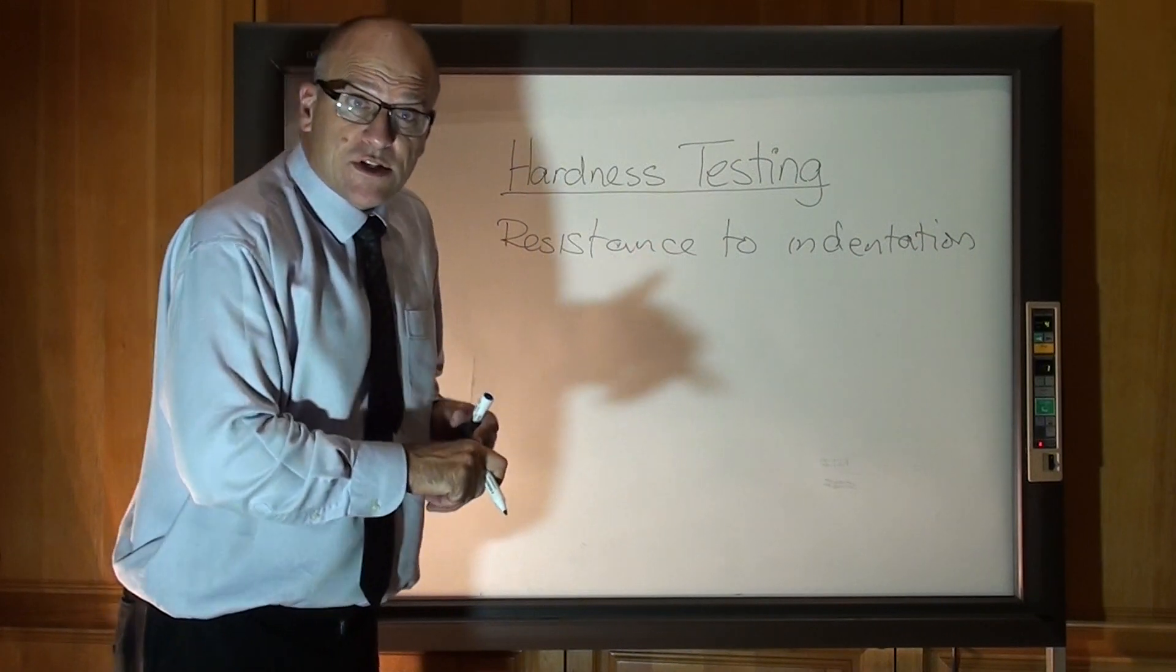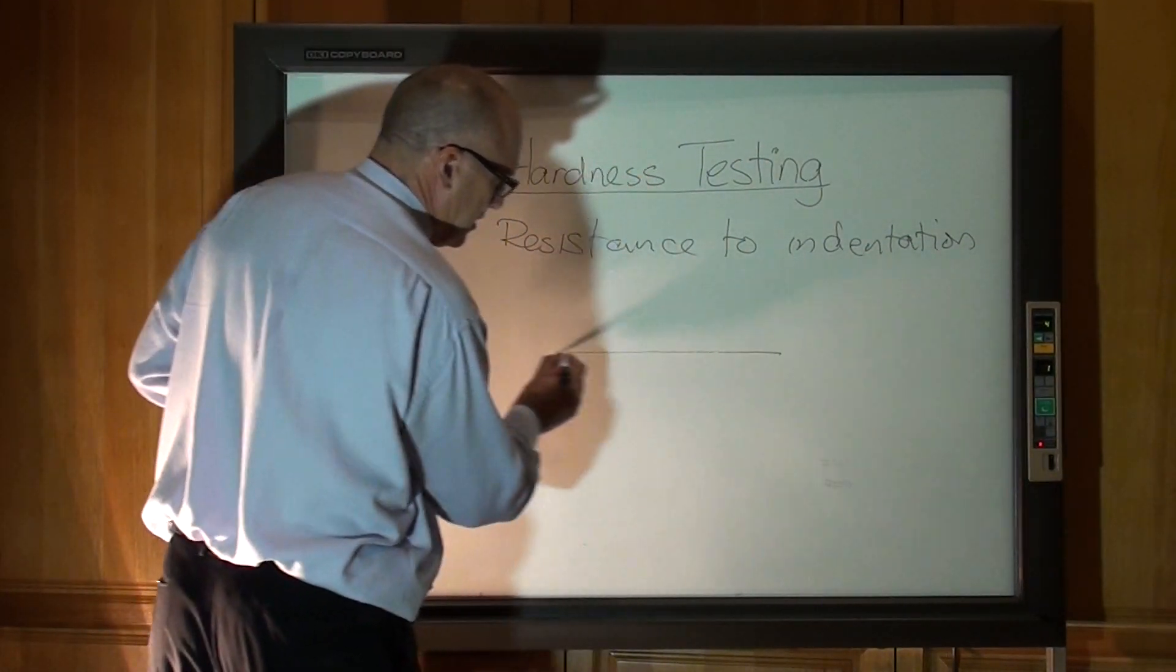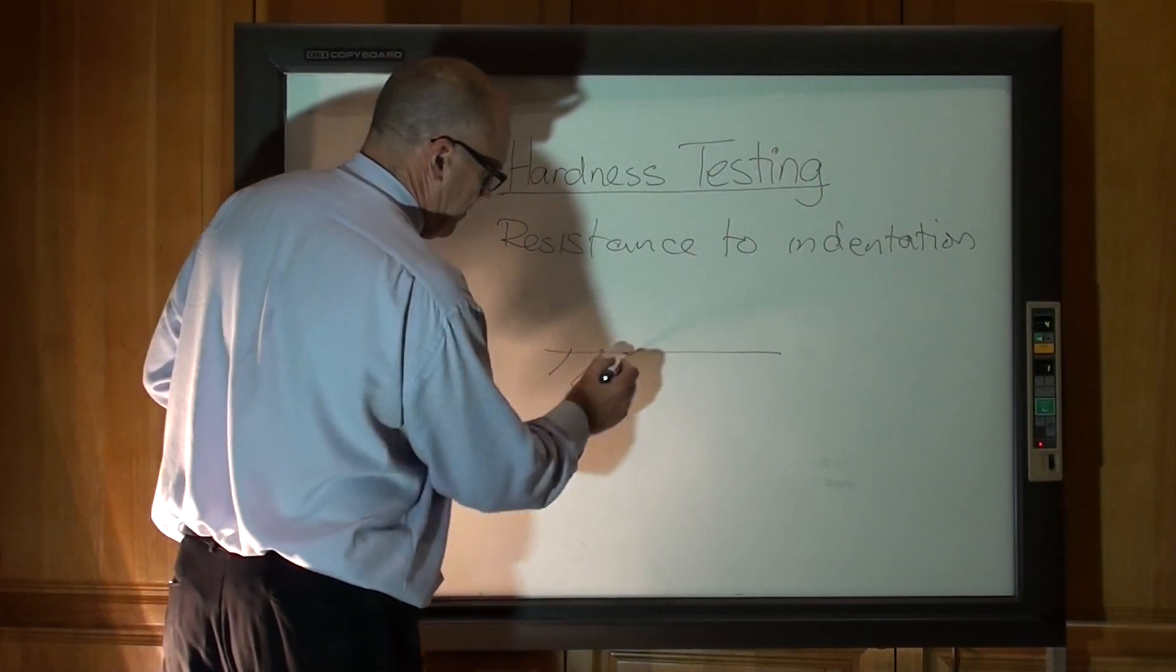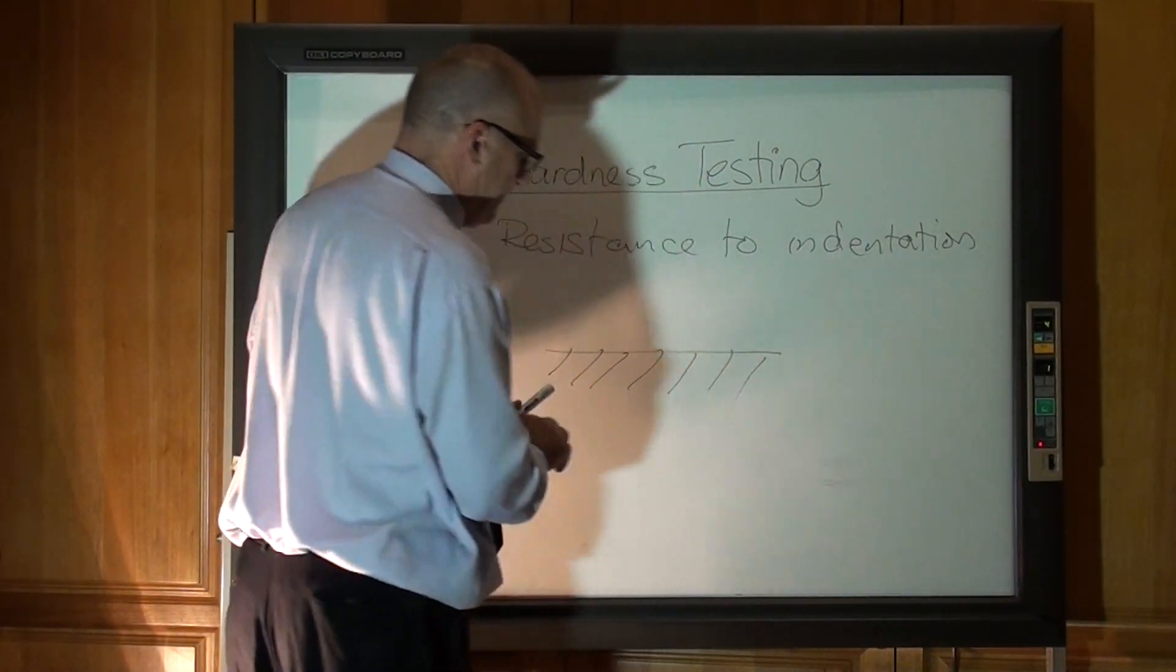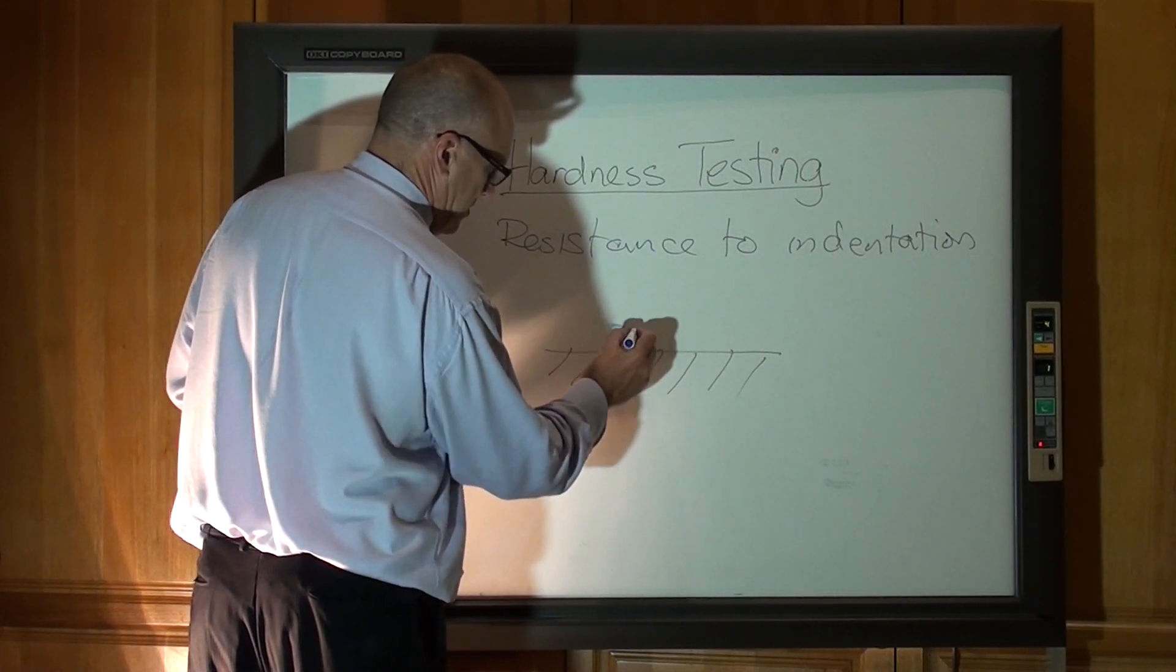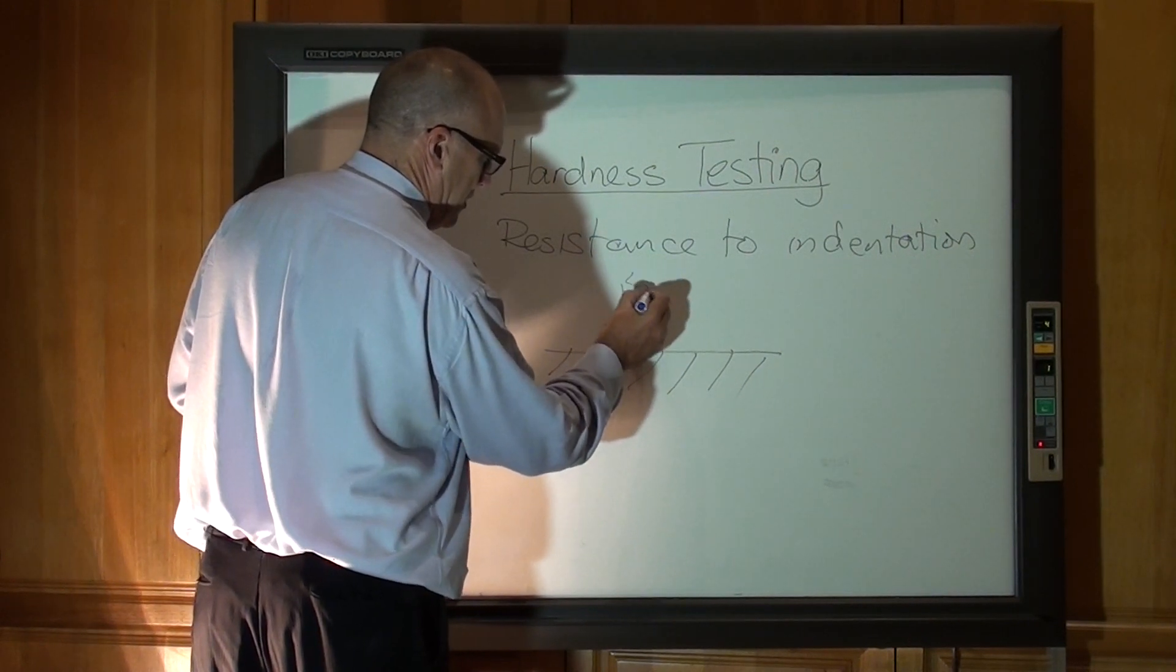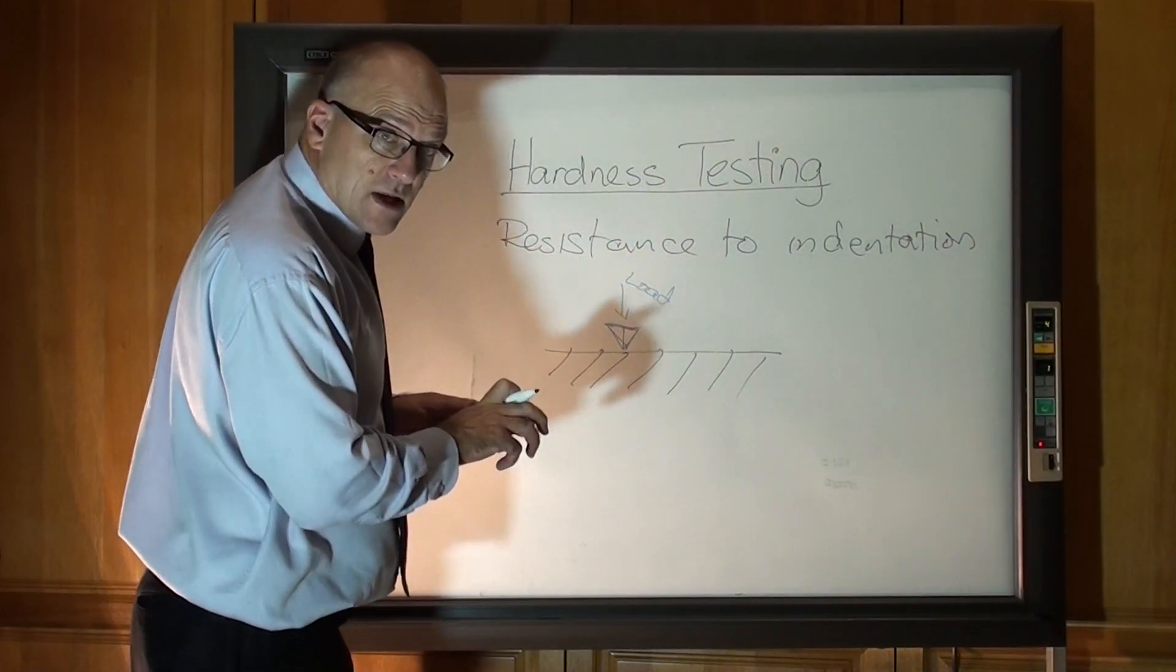Hardness is resistance to indentation. So, all we do is, here is a metal. Here it is. It could be a diamond pyramid, with a load on it, a fixed load. That is a Vickers test.